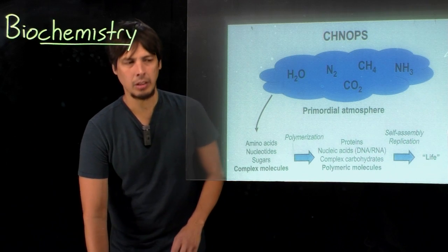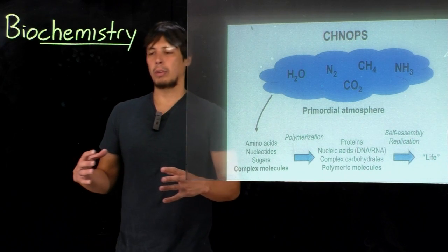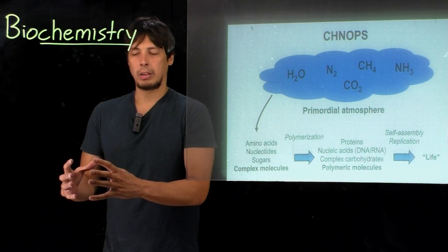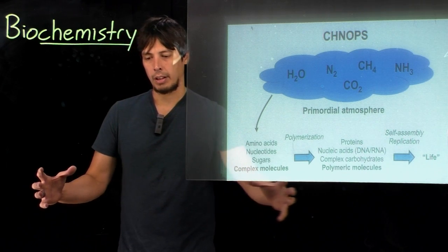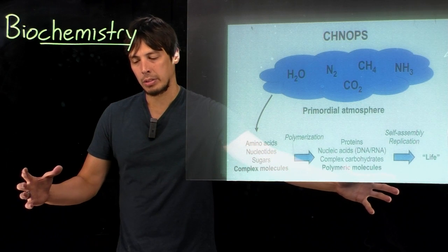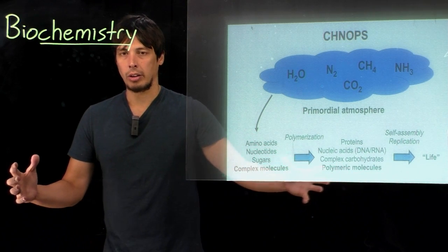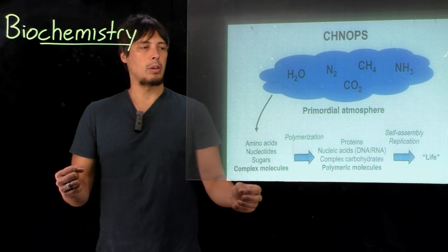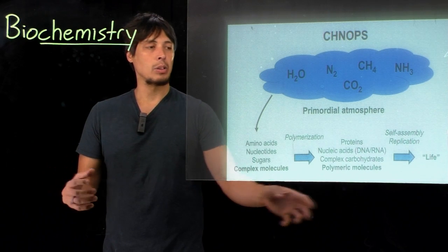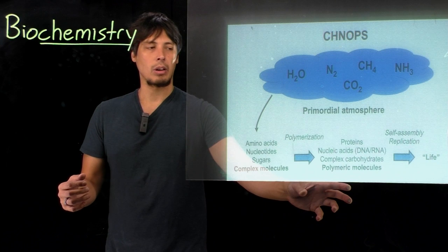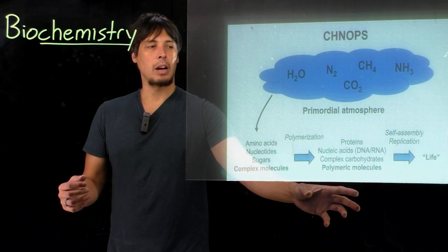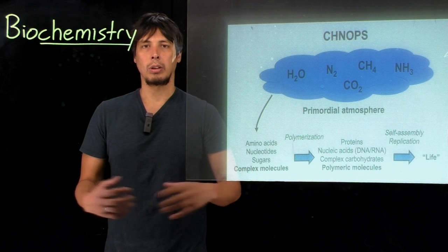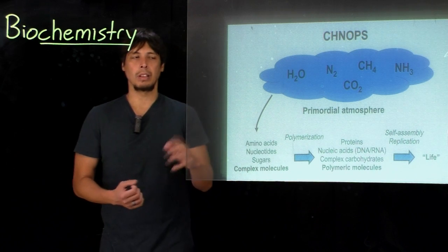Over time, these polymerize. So if you start with a subunit, which is one of these complex molecules, these may make chains of related molecules, so that you make a longer molecule. And these form what we see now as proteins, nucleic acids such as DNA or RNA, and complex carbohydrates. These appear to go through what are called condensation reactions, where you have elimination of water.